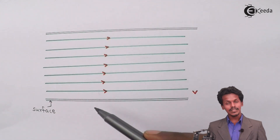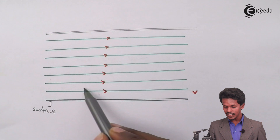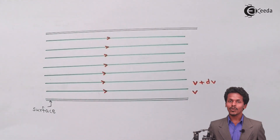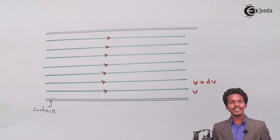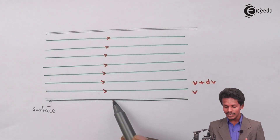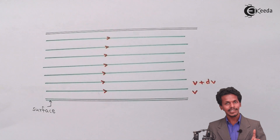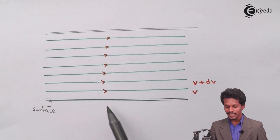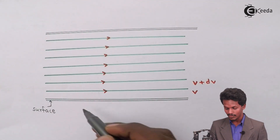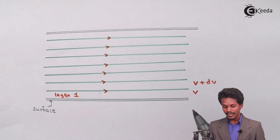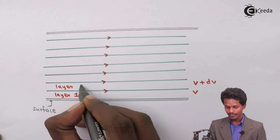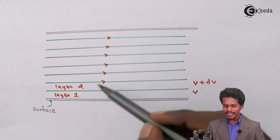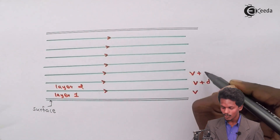The layer above the surface has more velocity compared to the lower layer, because the lower layer is in immediate contact with the surface and experiences more friction. The layer above does not have the same viscosity as layer 1, so layer 2 has an enhanced speed. As we move upward, the velocity keeps increasing.